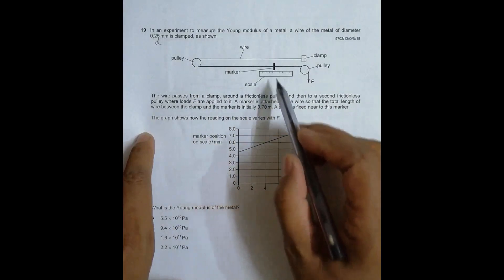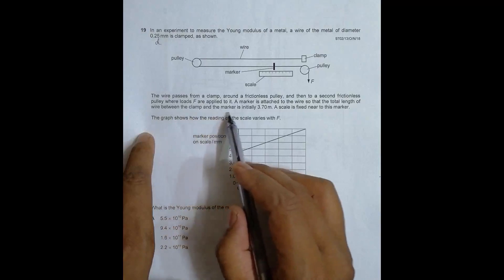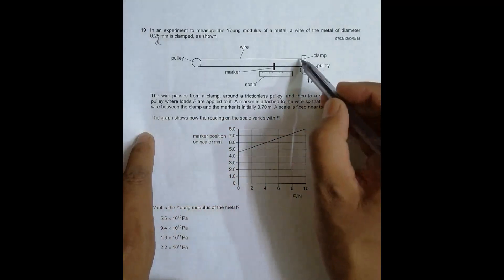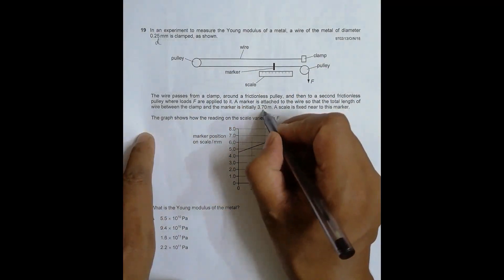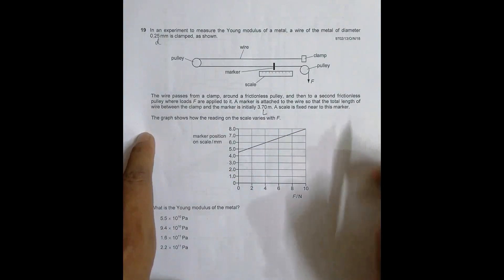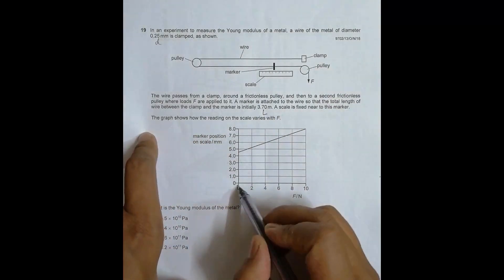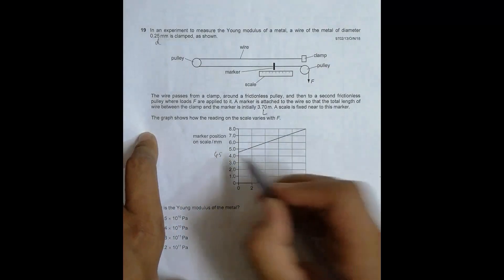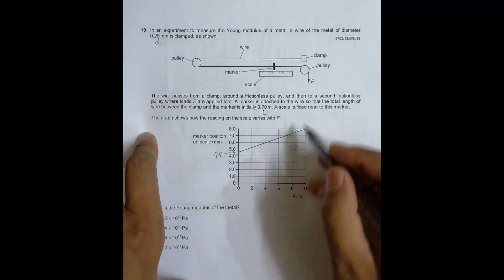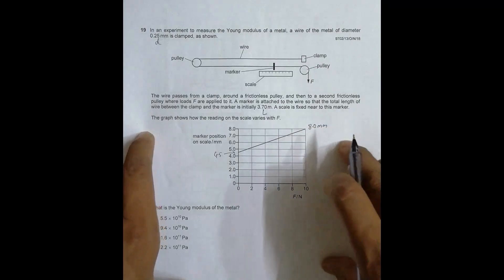A marker is attached to the wire so that the total length of wire between the clamp and the marker is initially 3.70 meters — this is the initial length L. A scale is fixed near the marker. The graph shows how the reading on the scale varies with F. When there is no force, the marker reads 4.5 millimeters, and when we apply a force of 10 Newtons, it reads 8.0 millimeters.